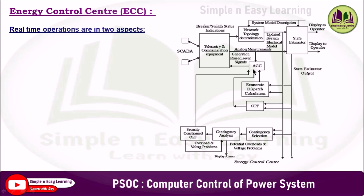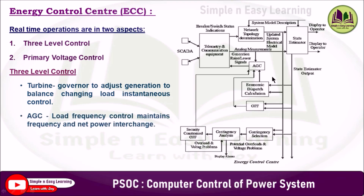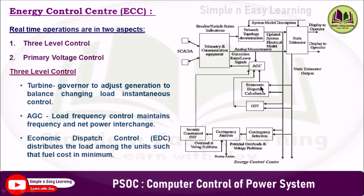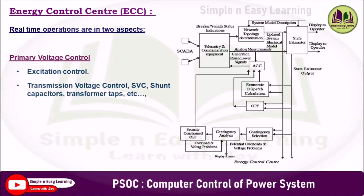Real-time operations involve two aspects: three-level control and primary voltage control. In three-level control, the turbine governor adjusts generation to balance changing load as instantaneous control. Automatic generation control performs load frequency control, which maintains the frequency and net power interchange. Economic dispatch control distributes the load among units such that fuel cost is minimized. Primary voltage control involves excitation control, and transmission voltage control using SVC, STATCOM, shunt capacitors, transformer taps, etc.